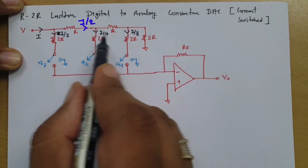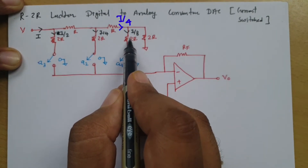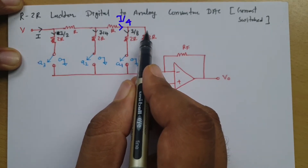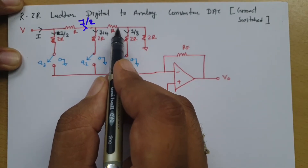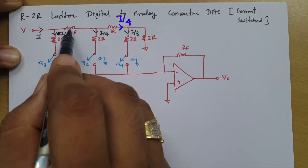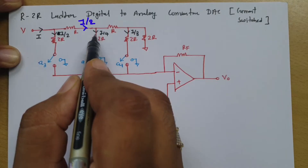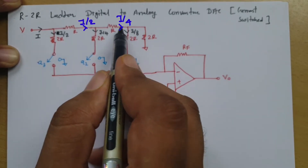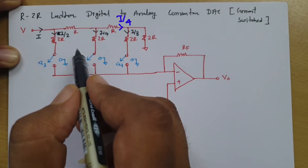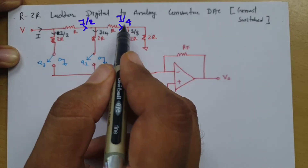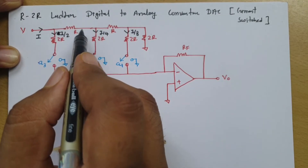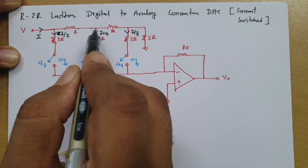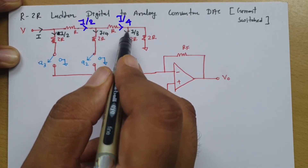The reason current divides by 2 every time is that we have 2R in parallel with 2R. So if I/4 current is present, it divides into I/8 and I/8. Similarly, I/2 divides because here we have a 2R resistor and R in series with the parallel combination of 2R, which gives R. R in series with R is 2R, so 2R parallel with 2R divides current equally. The equivalent resistance is again R in series with R = 2R, so the current subdivides into I/2, I/4, and I/8 at each node.